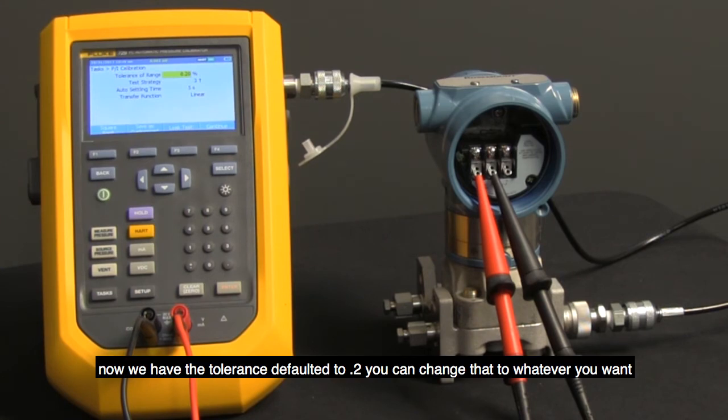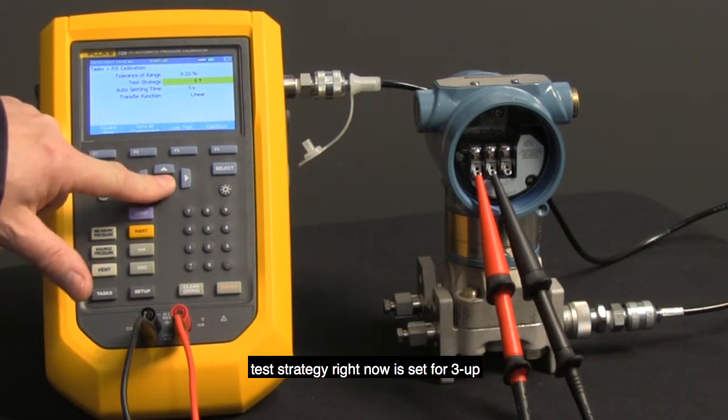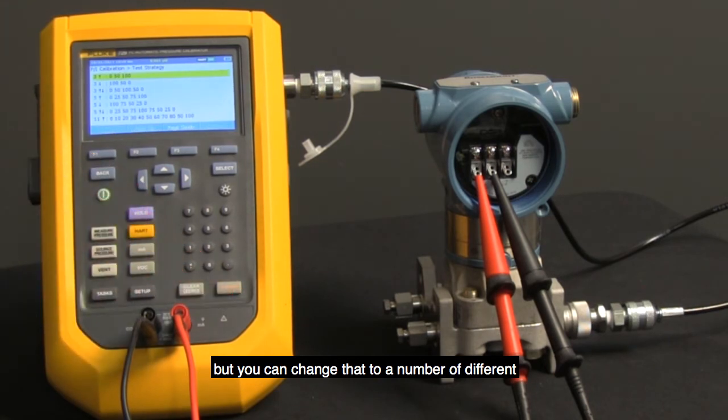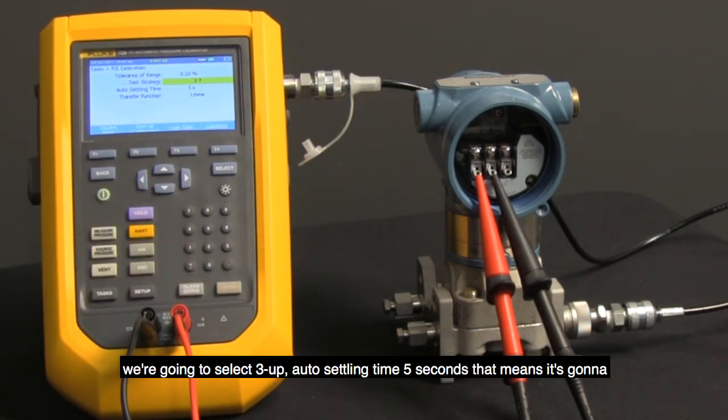Now we have the tolerance defaulted to 0.2. You can change that to whatever you want. Test strategy: right now I'll set for three up, but you could change that to a number of different preset calibration strategy test points. Okay, we're going to select three up.